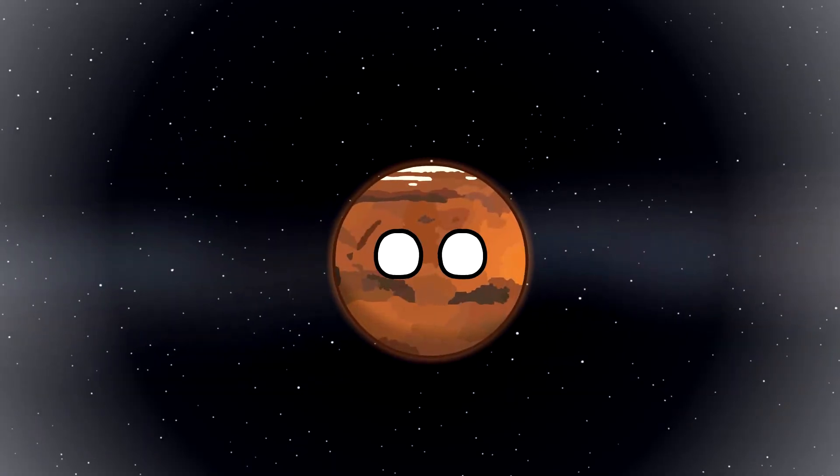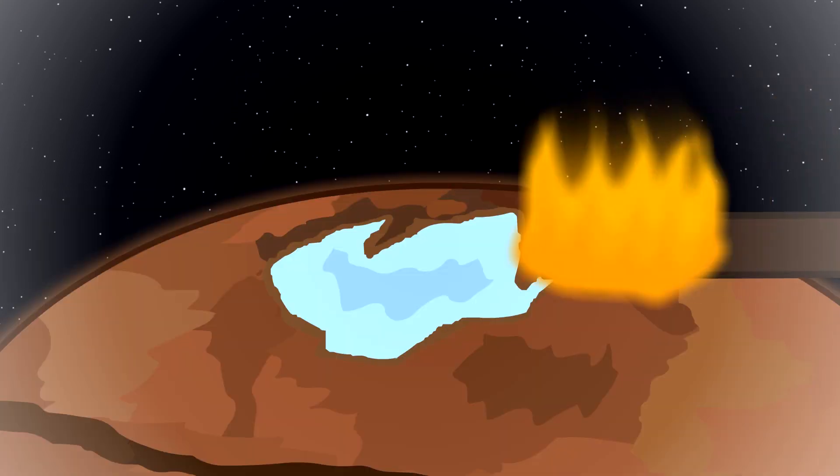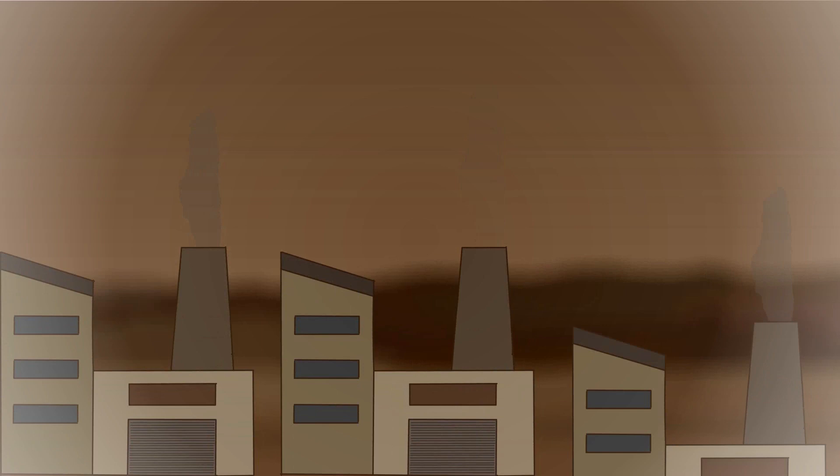To start, we need to restore your magnetic field to protect you from harmful solar winds. After that, melt polar ice caps, bombard you with meteorites, and build greenhouse gas factories on surface.